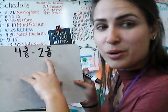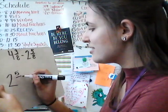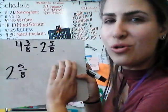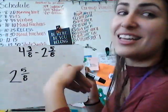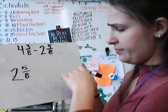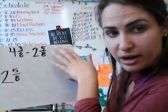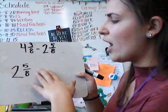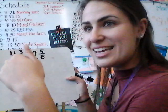So because 2 and 5 eighths is our part, we are going to start with 2 and 5 eighths. Our goal is to get to 4 and 3 eighths, which is our whole. Whole minus part equals part, but in addition, part plus part equals the whole. So we're going to break it up into increments, into parts.